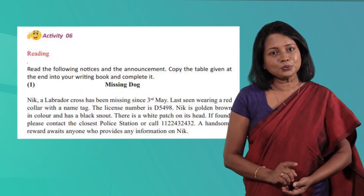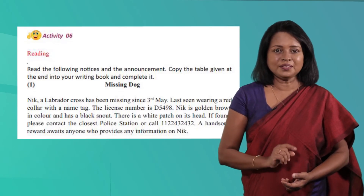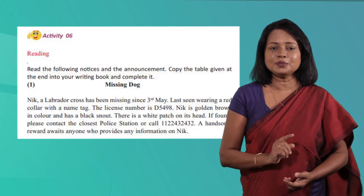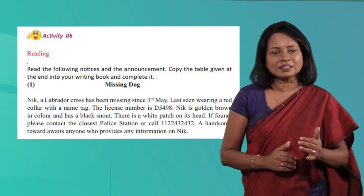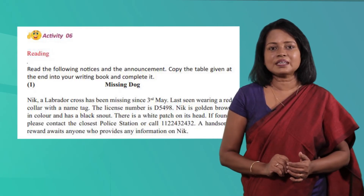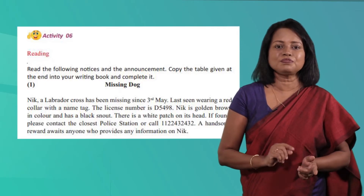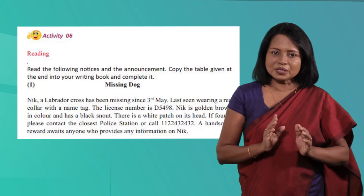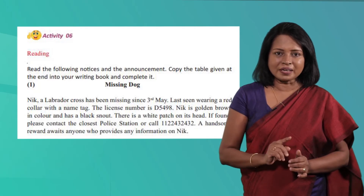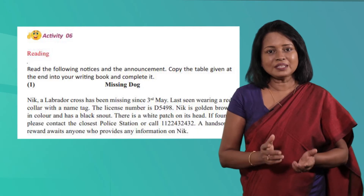This notice appears on page 7 of your textbook. It's a notice about something lost. What you have to do is read the notice and answer the questions that will be displayed on the screen. The questions will appear one after the other, and each question has four options. You have to select the correct answer from these four options. And remember children, if you want, you can pause the video, go back and read the notice and come back to the activity once again. You can start now.